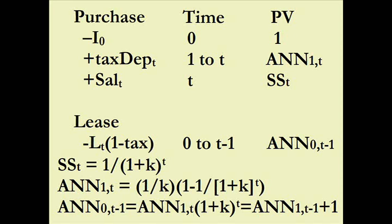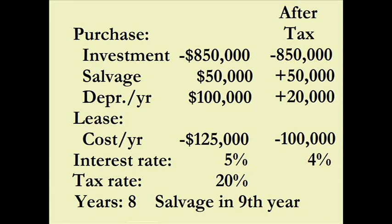The annuity for a beginning-of-period payment is the end-of-period annuity times one period's present value sooner. A trick: go up one row on the annuity table and add the number one to it — you'll get the same factor. And of course no presentation would be complete without a numeric example.